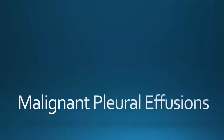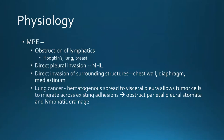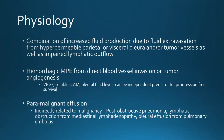Moving to malignant pleural effusions: the physiology involves lymphatic obstruction. Malignant pleural effusions are mainly caused by lymphatic obstruction in lung cancer, breast cancer, and Hodgkin's lymphoma. Non-Hodgkin's lymphoma causes direct pleural invasion. Lung cancer can also cause hematogenous spread to the visceral pleura, which then migrates to the parietal pleura and blocks lymphatic drainage. It's really a combination of increased fluid production and decreased ability to drain due to overwhelmed parietal pleural lymphatics.